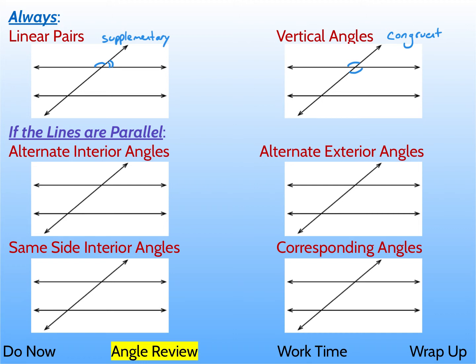Now, these relationships down here are only true if the lines are parallel to one another — that's crucial. These relationships only exist if lines are parallel. The alternate interior angles — one on the left, one on the right, and inside the two parallel lines — are always congruent as long as the lines are parallel. Alternate exterior angles: same idea, one on the left, one on the right, but outside the parallel lines — those are also congruent when you have parallel lines.